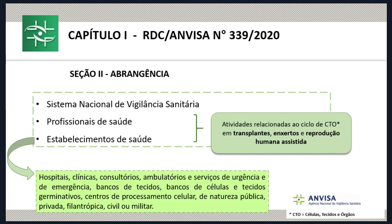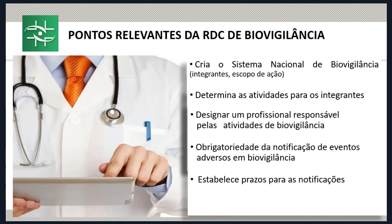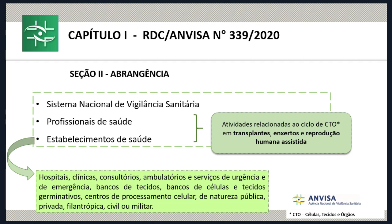A norma determina a abrangência, ou seja, quais são os componentes e integrantes do Sistema Nacional de Biovigilância. São os entes do Sistema Nacional de Vigilância Sanitária em todos os seus componentes de nível federal, estadual e municipal, assim como os profissionais de saúde e estabelecimentos de saúde que tenham atividades relacionadas ao ciclo de células, tecidos e órgãos. Isso inclui, fechando mais o leque, transplantes, enxertos e reprodução humana assistida.